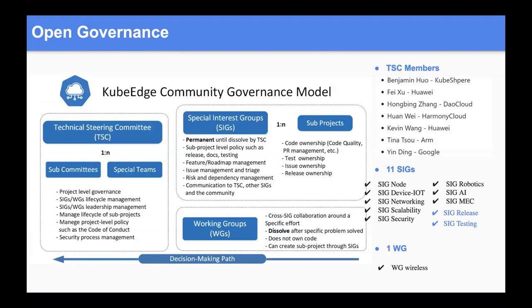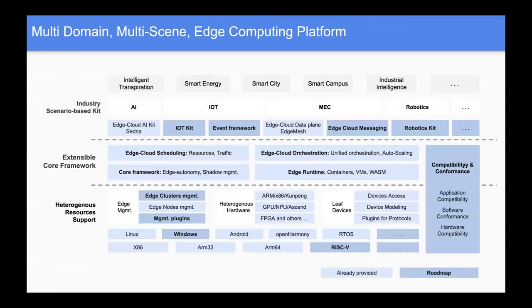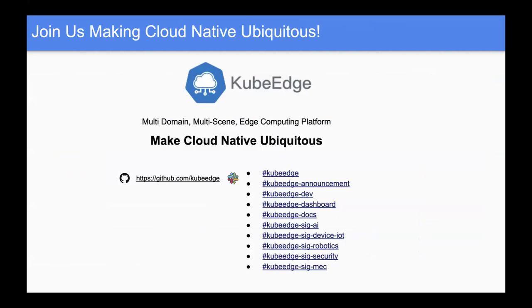For our community, we currently have 11 SIGs as presented, plus one working group — a wireless working group — and we have our TSC. We hold bi-weekly TSC meetings to discuss all community issues, handle leadership management, and supervise all the SIGs. Here is a landscape of the vendors who have adopted our project, and an overview of our structure.